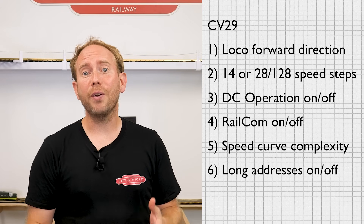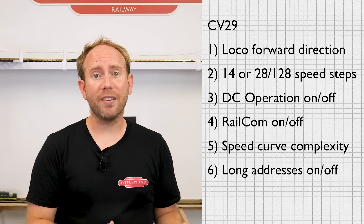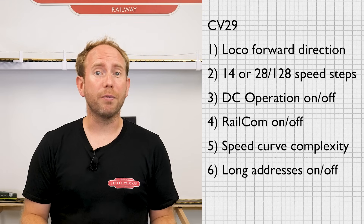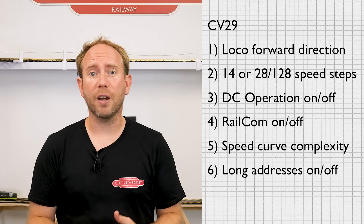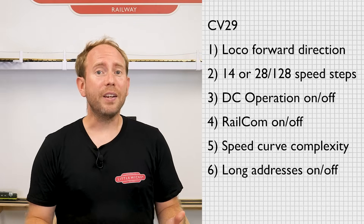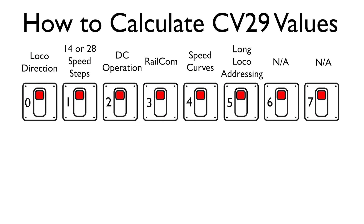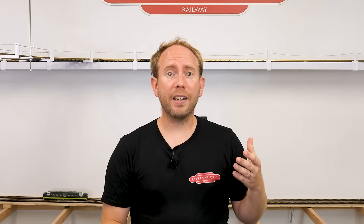Long addressing is useful if you own more than 127 locos, or some people like to link the decoder address to the running number on the loco — for example, combining the first and last two digits of the running number. Not all controllers support long addressing though. CV29 has eight bits — bit stands for binary digits — and you can think of these like on/off switches for each of the options: bit 0 is loco direction, bit 1 is speed steps, bit 2 is DC operation, bit 3 is RailCom, bit 4 is speed curves, and bit 5 is long loco addressing. Bits 6 and 7 aren't generally used.